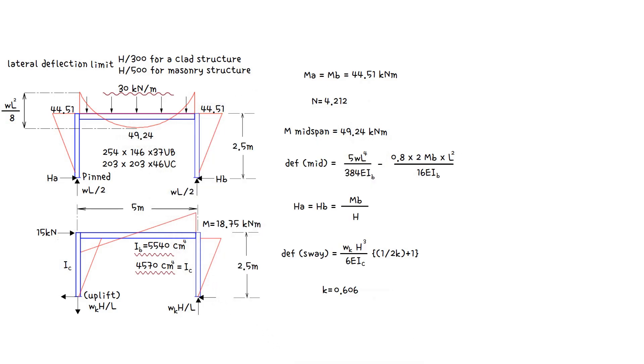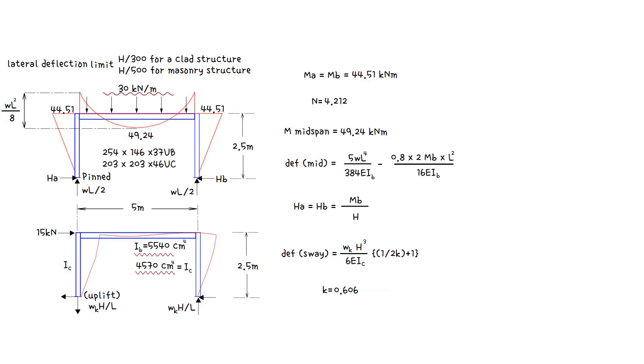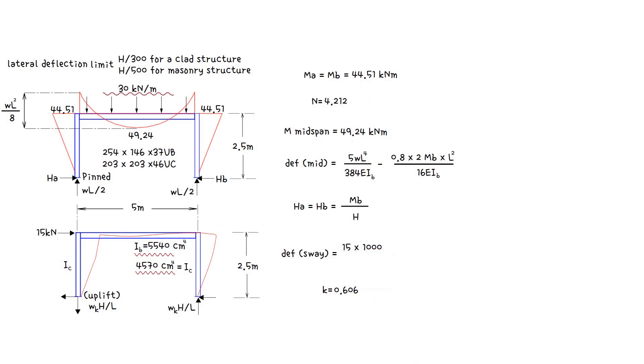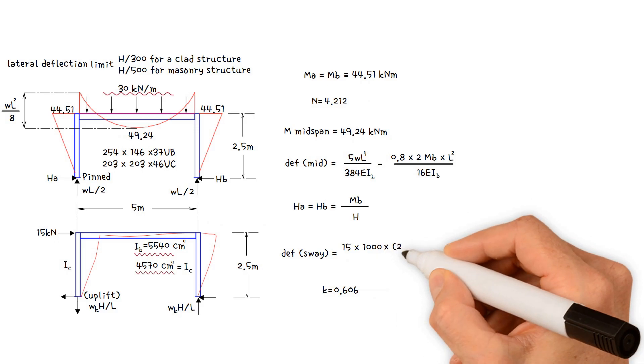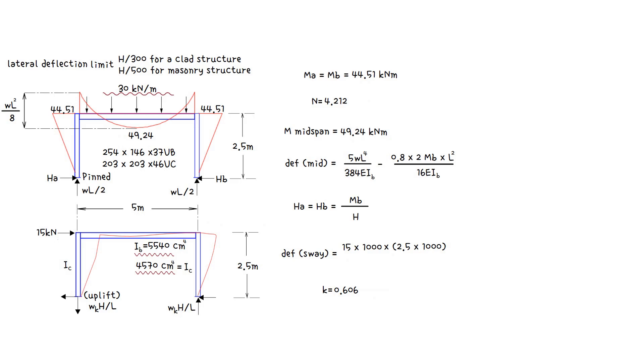Following that, calculate the sway deflection as a result of the wind load. Deflection sway equals this formula. Therefore, wind load 15 kilonewtons times 1,000 to convert it to newton times height 2.5 meters times 1,000 to convert it to millimetre to 3.